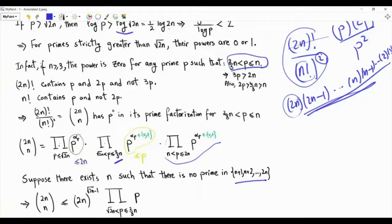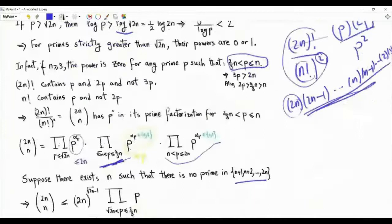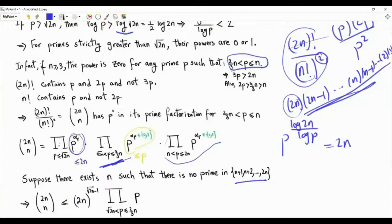For the upper bound: each term in the product over primes in (sqrt(2n), 2n/3] is at most p (since the power is 0 or 1), so we assume all powers equal 1. For the product over primes ≤ sqrt(2n), the highest possible prime power is floor(log(2n)/log(p)), and since p^(log(2n)/log(p)) = 2n, each term is upper bounded by 2n. So this product is upper bounded by (2n)^(sqrt(2n)-1). We need to further upper bound the product of primes up to 2n/3.